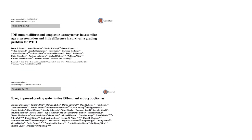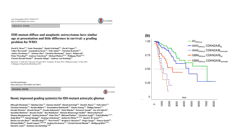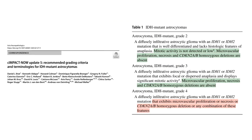Then what about IDH mutant astrocytomas? Is there any survival difference among grade 2 and grade 3? Absolutely not. Do we have any molecular markers to identify the inferior outcome? Of course we do. Out of many molecular markers tested, CDKN2A/B homozygous deletion has the strongest evidence until now. IDH mutated grade 3 and grade 4 tumors with CDKN2A/B homozygous deletions have inferior survival rates compared to tumors that do not exhibit these deletions. Hence, it is introduced as a molecular marker in identifying poorly performing IDH mutant astrocytomas along with morphological grading.